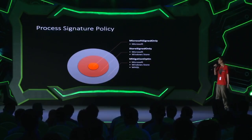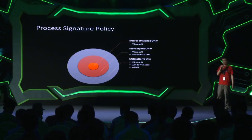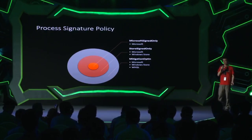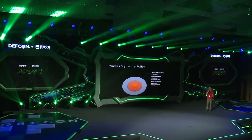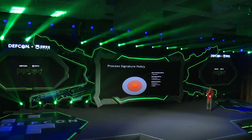There are three levels for process signature policy. The first is Microsoft signed only — the most restrictive, allowing only certain Microsoft core system files. The second is store signed only, which allows loading additional files from the Windows Store; all universal Windows apps have this level of protection enabled, so they cannot load unsigned DLLs by default. The last is mitigation opt-in, which also allows Microsoft, Store, and WHQL files, which are normally part of a device driver package.